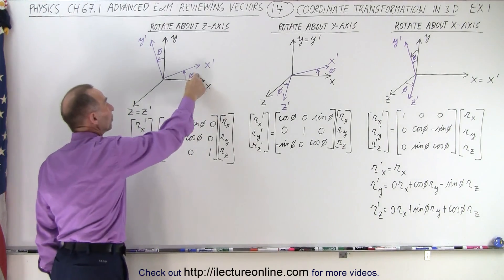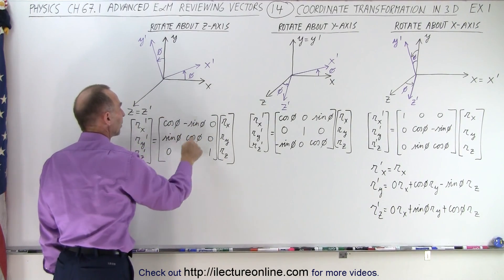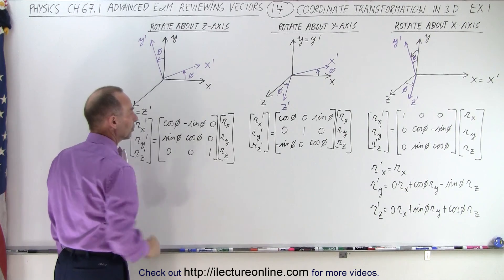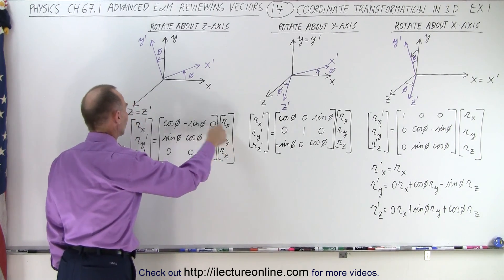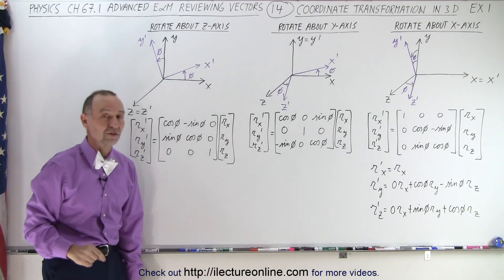Then all we need to know is what is the angle through which we rotate, put the angle values in here, and now we have the coordinate matrix or the transformation matrix to go from the original coordinate system into the transformed coordinate system.